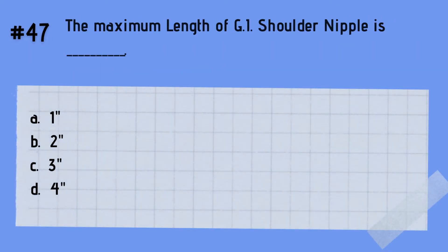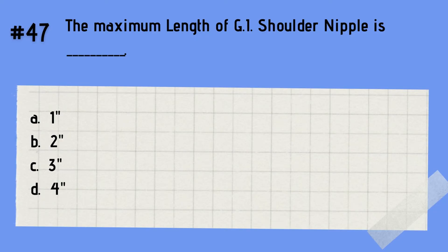Question 47: What is the maximum length of a G.I. shoulder nipple? A. 1 inch. B. 2 inches. C. 3 inches. D. 4 inches. The answer is C — 3 inches. Always remember that the maximum length of a G.I. shoulder nipple is 3 inches.